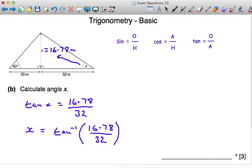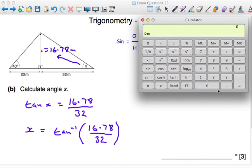So if I pull up the calculator, I want 16.78 divided by 32 equals. Now I want tan to minus 1. It's usually the same button as the tan, and on this calculator I need to press the shift button, then it becomes the tan to minus 1 function. And it's 27.7 degrees to one decimal place. x is 27.7 degrees.